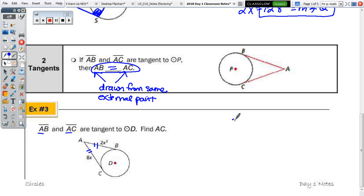So, at number three, we have AB and AC are tangent to the circle, both drawn from the same external point, A. So, they are congruent. So, their lengths are equal. 2X squared equals 8X. Now, we've solved a lot of quadratics using the square root method in the right triangles unit. So, I'm going to start changing it up a bit and I'm going to solve this by factoring.